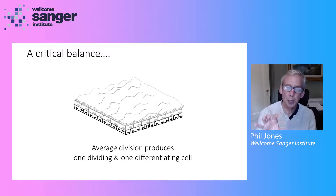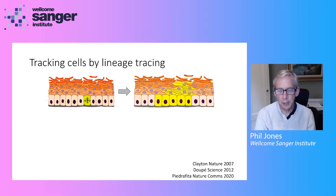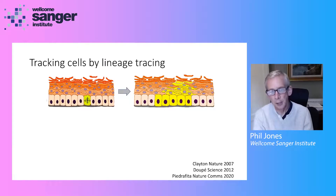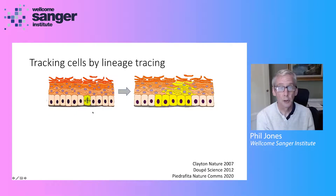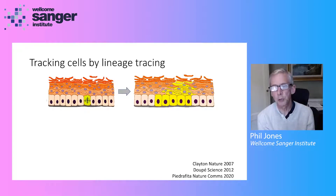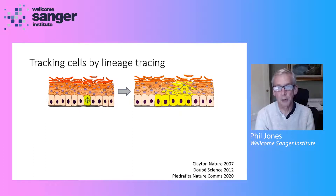We wanted to understand how this beautiful balance is achieved in the mouse esophagus, and we've done this using a technique called lineage tracing. We use transgenic tools to genetically label scattered single cells in the dividing cell layer of the mouse esophagus. As time goes by, that labelled cell divides and may produce a group of labelled cells. By analysing esophaguses at different time points after inducing labelling, we can get a set of family trees showing how the single cells have behaved.